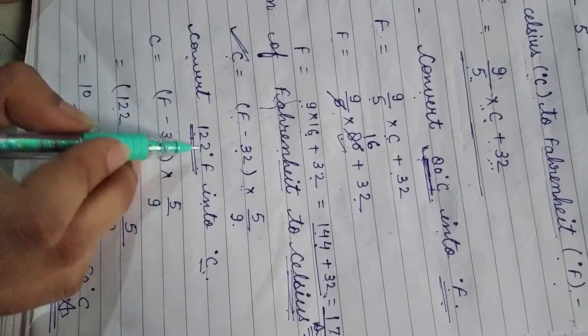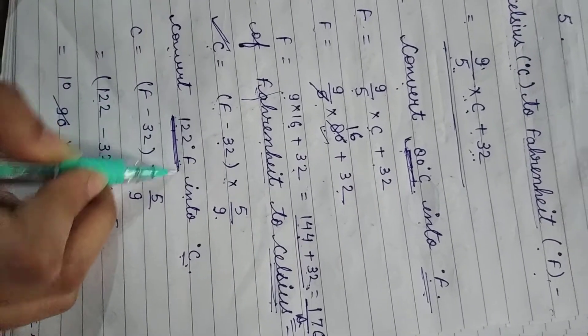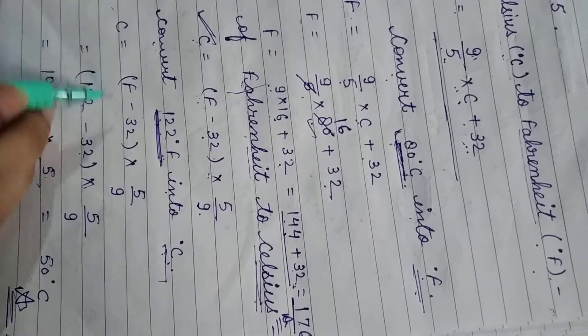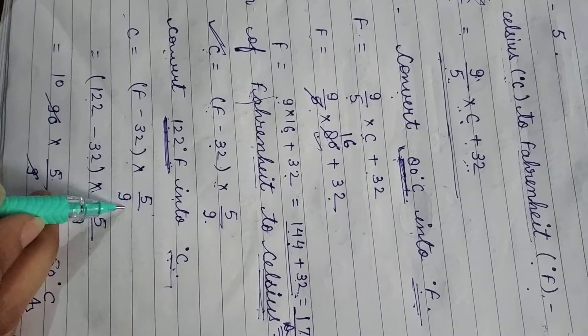Example: convert 122 degrees Fahrenheit into Celsius. Using the formula C equals F minus 32 into 5 upon 9.